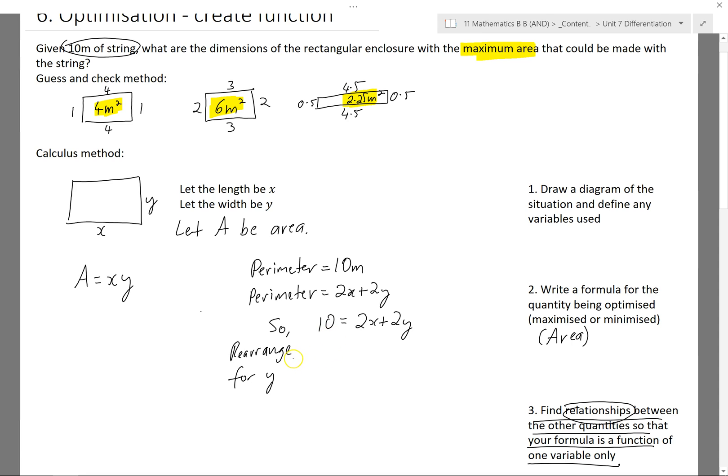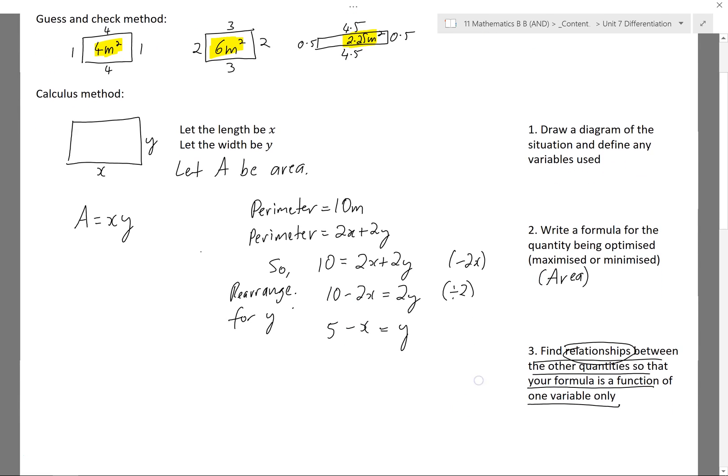So I'll try and get y by itself. I'll get rid of that 2x to the left hand side and then divide both sides by 2. So divide 10 by 2 is 5 minus 2x by 2 is x. So now I've rearranged this so I've got y equals 5 minus x. What I'm going to do is now in this original equation, I'm going to substitute y equals 5 minus x. So instead of writing y here, I'm going to put 5 minus x in there. So I'll rewrite my equation. So area equals x times 5 minus x, and now it's just a function of one variable, so I can write it in function notation if I want.